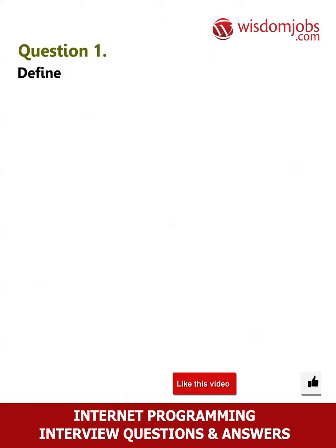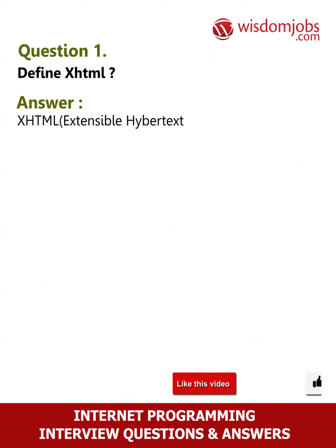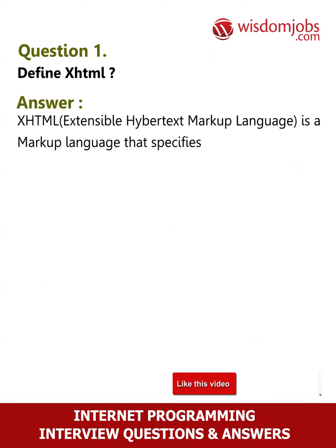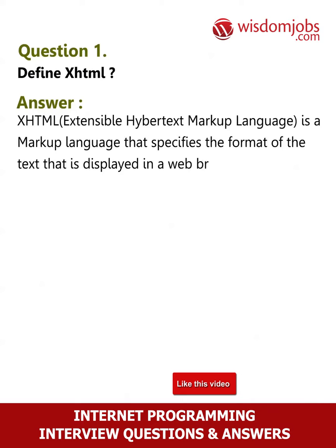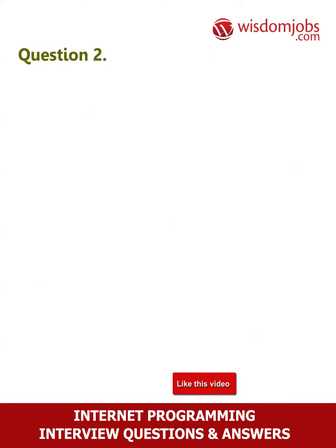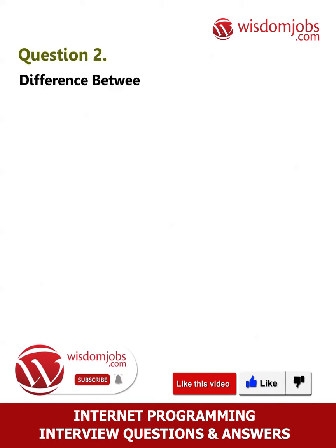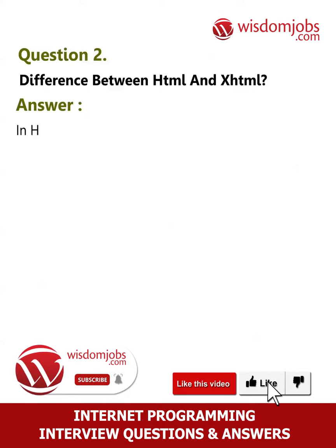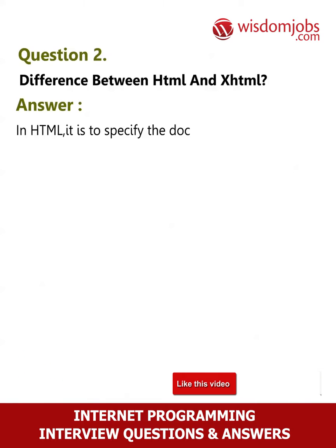Question 1: Define XHTML. Answer: XHTML, Extensible Hypertext Markup Language, is a markup language that specifies the format of text displayed in a web browser, such as Microsoft's Internet Explorer or Netscape. It is a cross between HTML and XML.